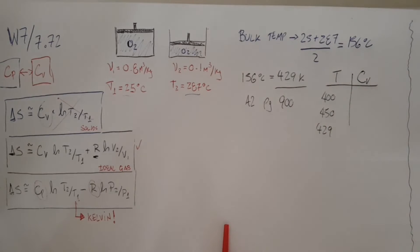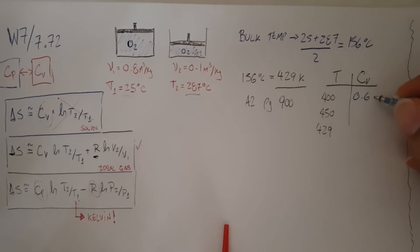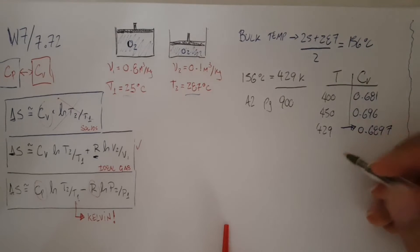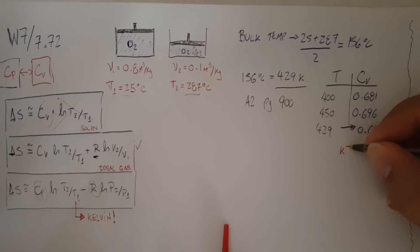I do have a value for 400 and I do have a value for 450, and I'm after the value for 429. These are all in Kelvin. On this side here, I have 0.681 and 0.696. Then I'm going to interpolate here, and what I got is 0.6897. Just to be sure, because this is quite important, this is all in kilojoules per kilogram Kelvin. That's the unit for all the CVs there.